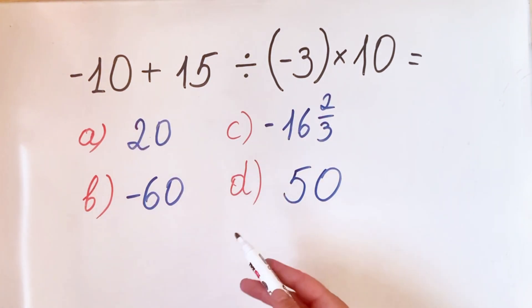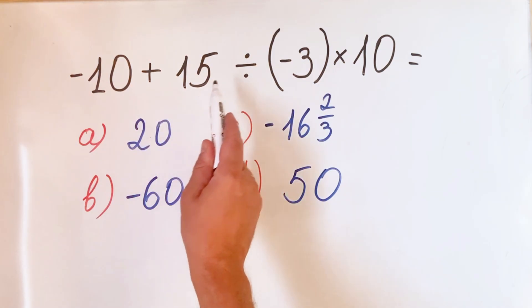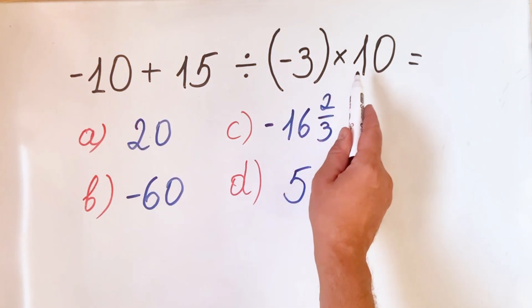Hello everyone, today we have an unusual equation. So we have minus 10 plus 15 divided by minus 3 multiply by 10.